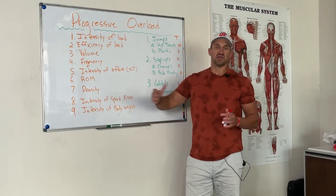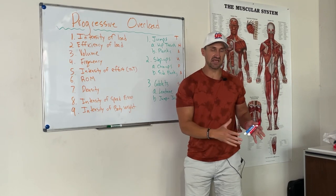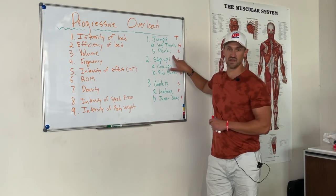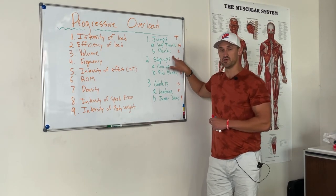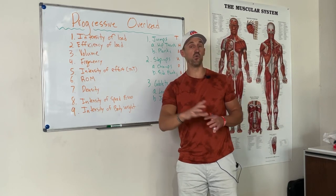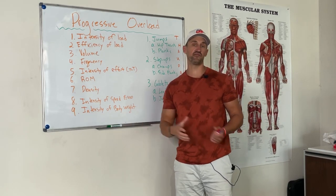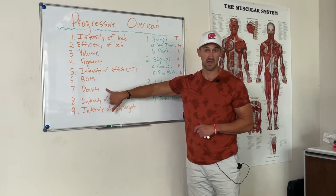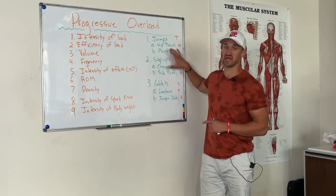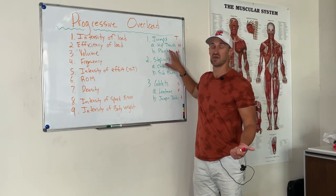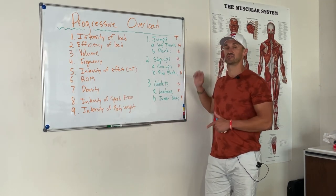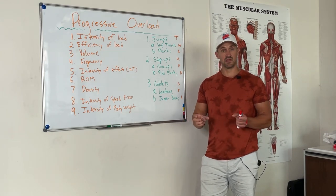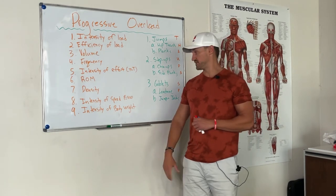Seven is density. Let's say you do 10 sets in an hour. A week later you can do those same 10 sets in 45 minutes — the density is more efficient. There's also the option of doing 10 sets day one and 12 sets day seven in the same amount of time, meaning you're doing more work.